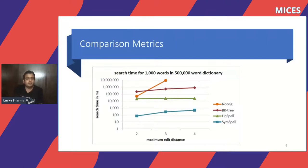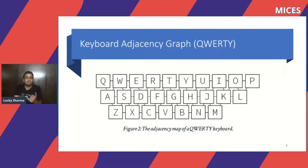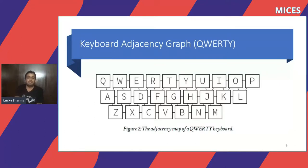Here are some metrics. Compared to Norvig's spell corrector and Lint spell, SIM spell performs much better on a 500,000-word dictionary with search time for 1,000 words. This is the QWERTY distance matrix we use. We see that V connects to both C, F, G, and B. We weight them based on direct adjacency versus diagonal adjacency — direct connectivity has lower weight and diagonal connectivity has slightly higher weight.